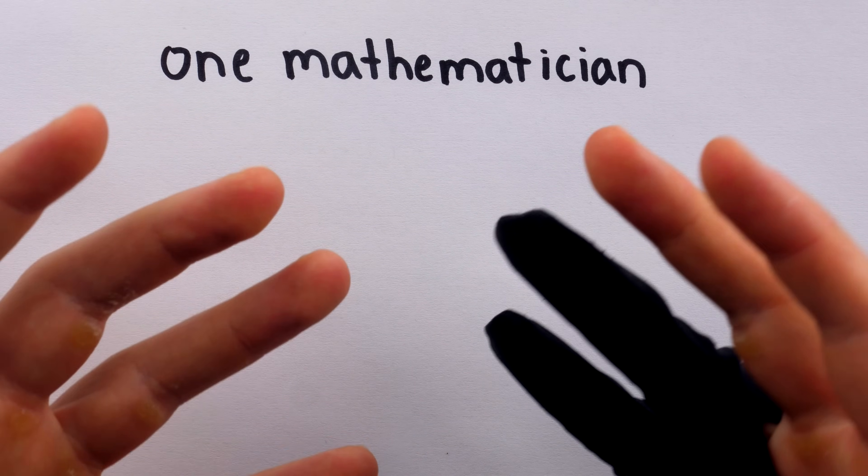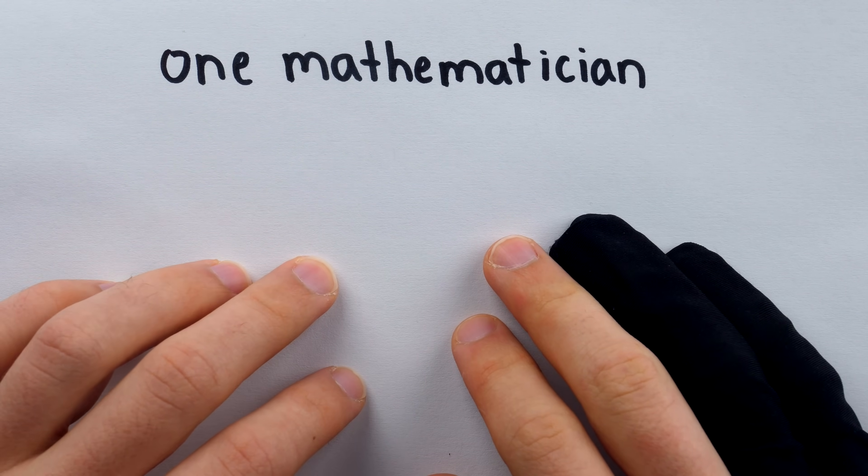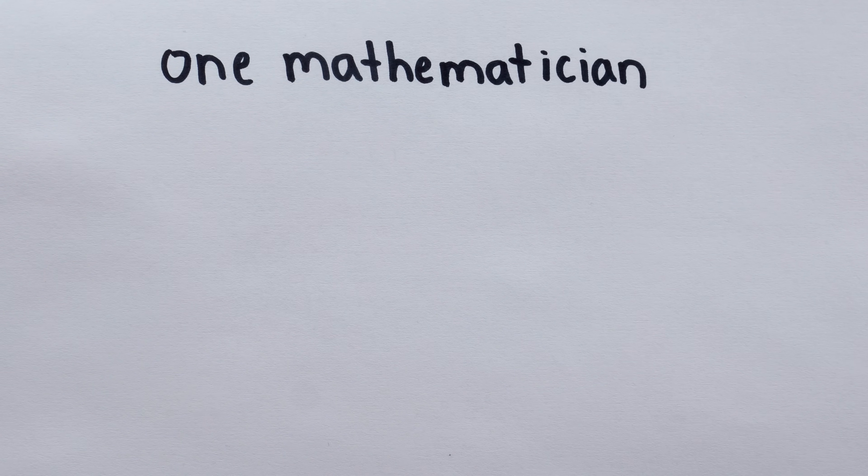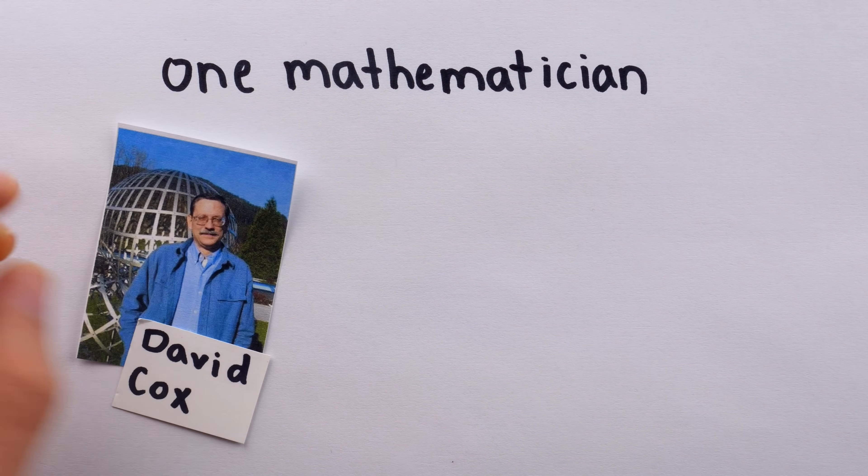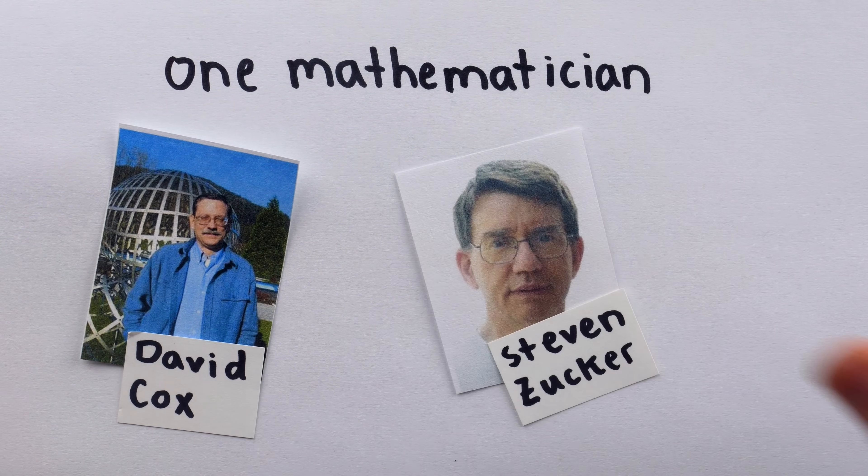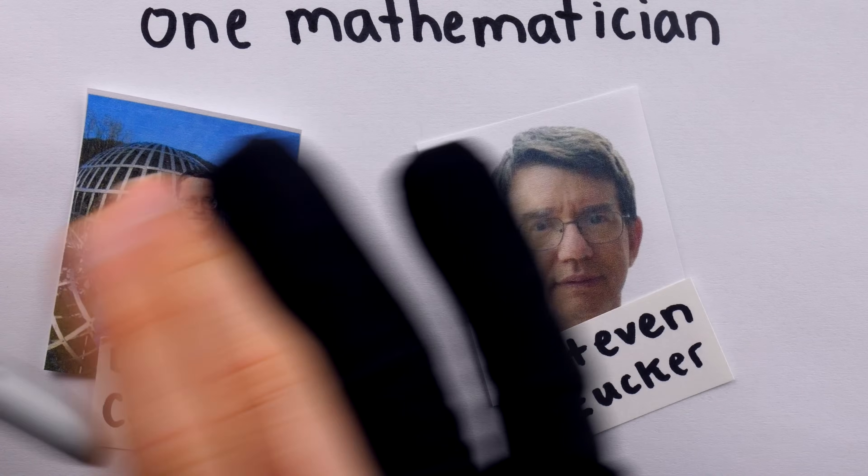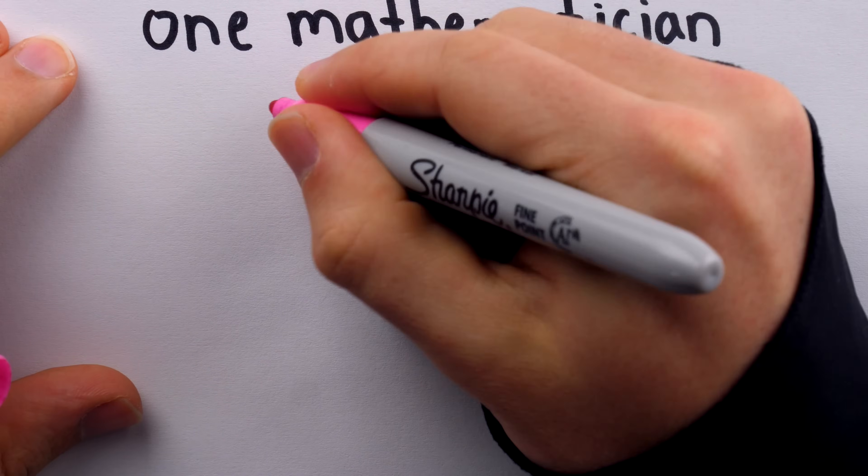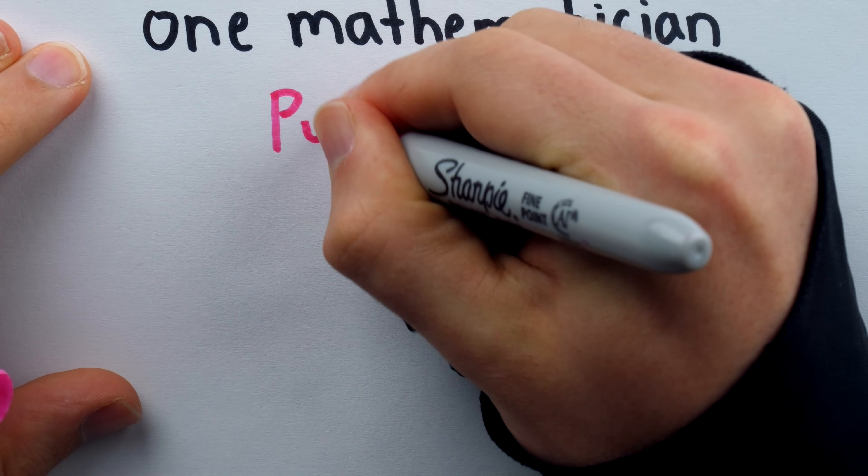And let's just suppose it's the life of your mother which is on the line. What mathematician are you going to name? Perhaps David Cox and Stephen Zucker? Or perhaps not. No, of course, with such high stakes, you're going to name Pythagoras.